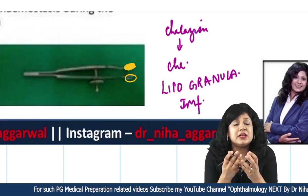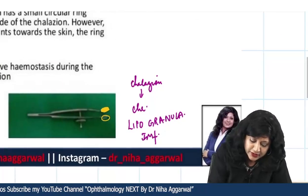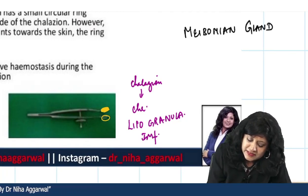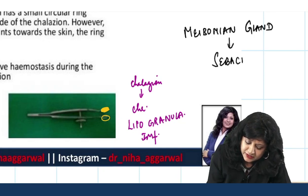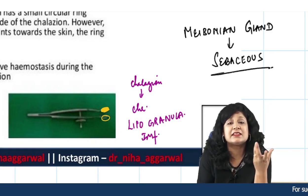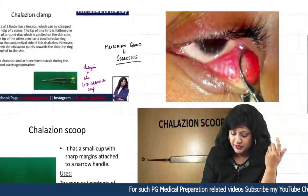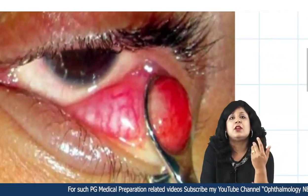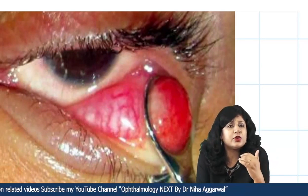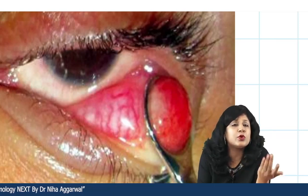This nodule is formed due to the accumulation of secretions in the meibomian gland. The meibomian gland is actually a sebaceous gland, so its secretions are also sebum-like oily secretions, leading to a nodule formation. This nodule can be formed in the upper eyelid or the lower eyelid, but because the number of meibomian glands is greater in the upper eyelid, we tend to see it more commonly there.